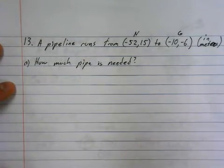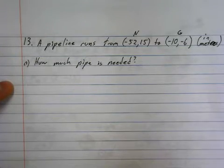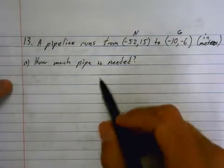Okay, 13. A pipeline runs from point N to point G. Those are your two points. How much pipe is needed? So how much pipe is needed?